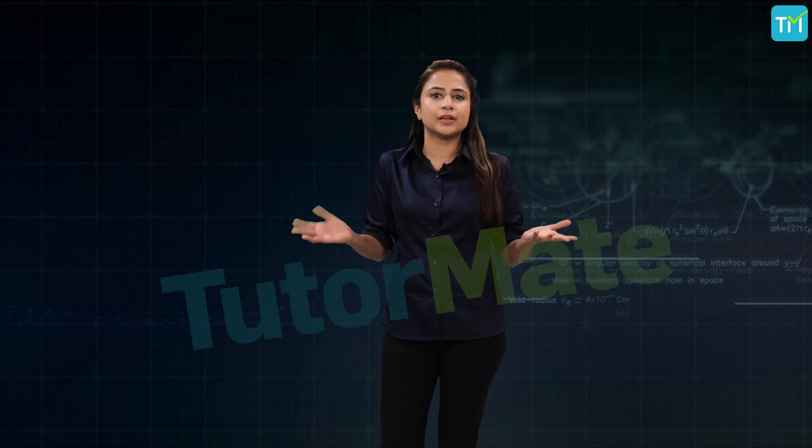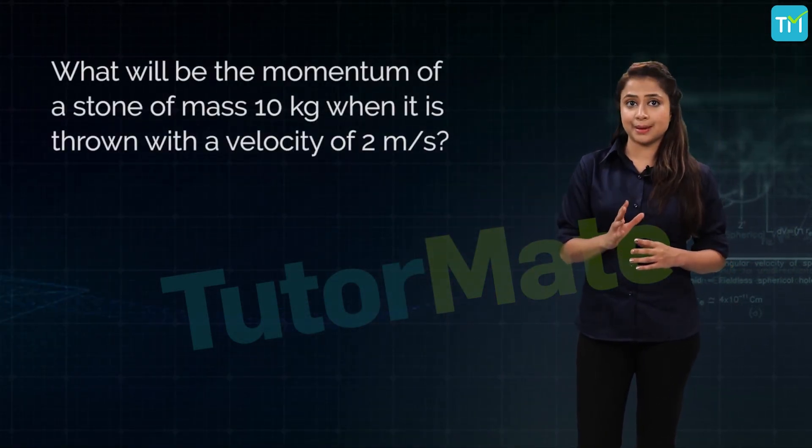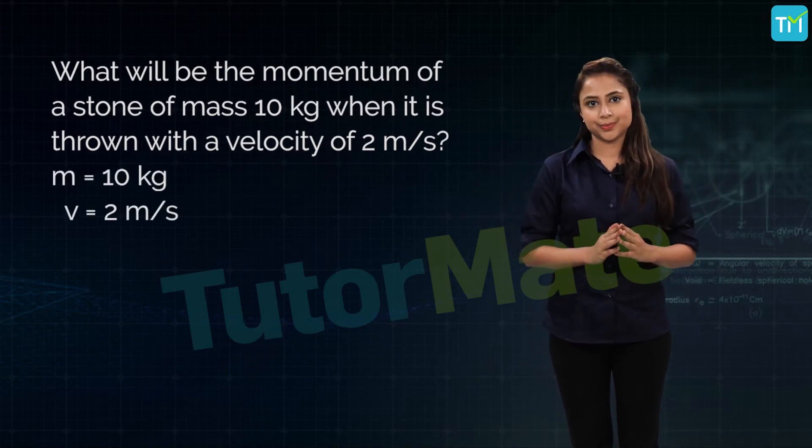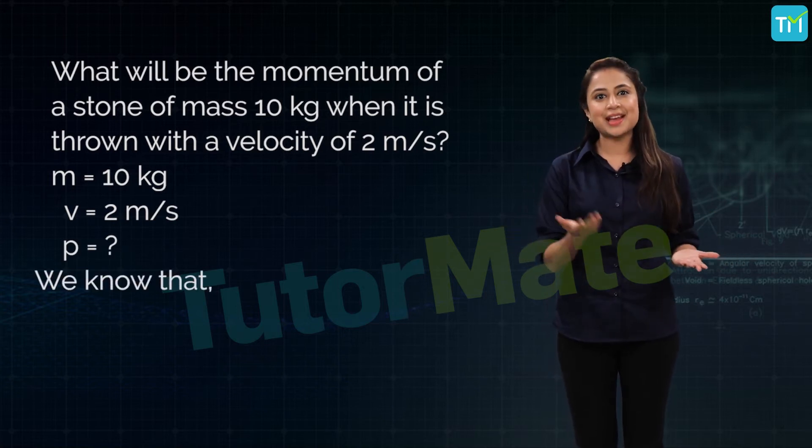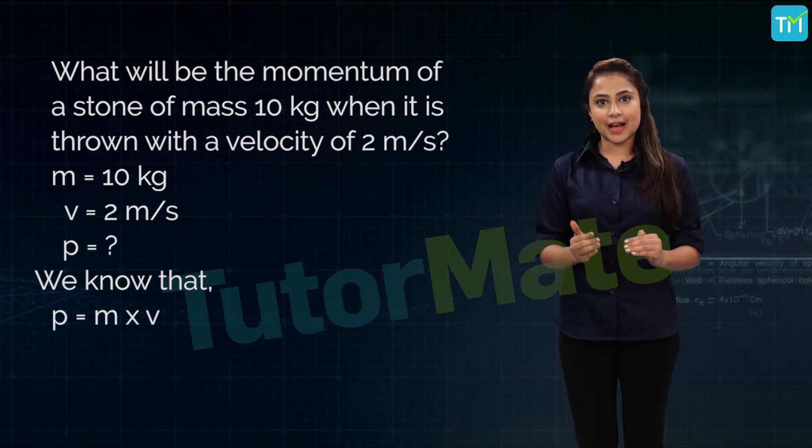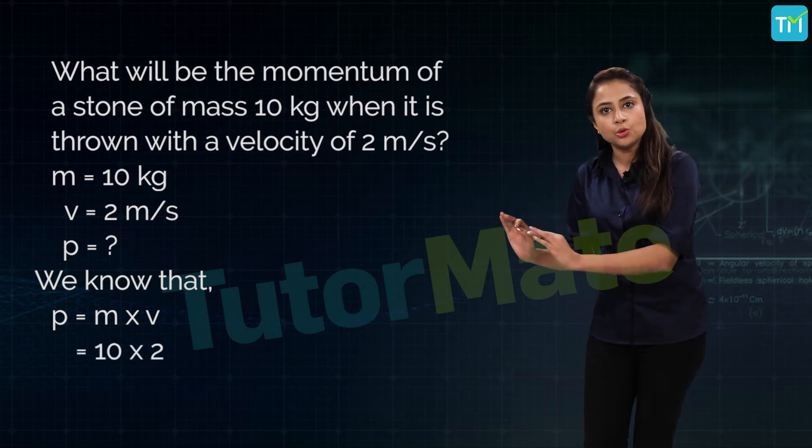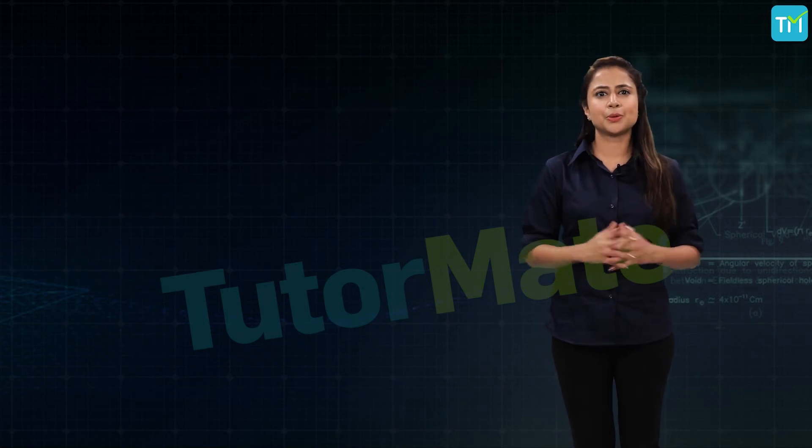Next, let's see whether we can solve some numerical problems based on momentum. Let's start with a simple one that asks us to calculate momentum. We've been asked to calculate the momentum of a stone of mass m = 10 kilograms and velocity v = 2 meters per second. We know that momentum p is equal to mass m into velocity v. Now, substituting the values which are known to us, we get p = 10 into 2, which is equal to 20 kg meters per second. Simple one.